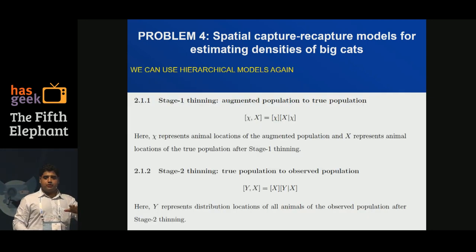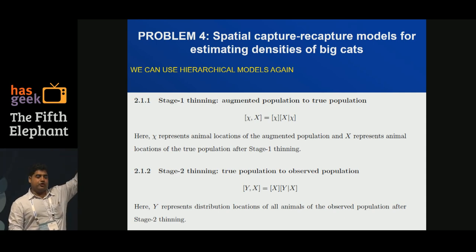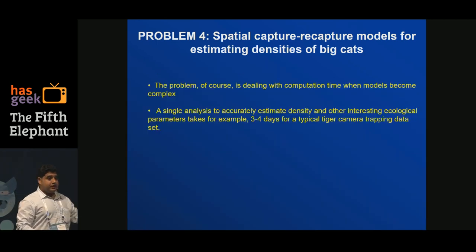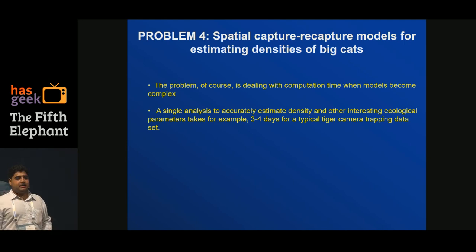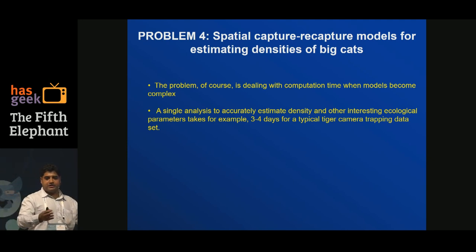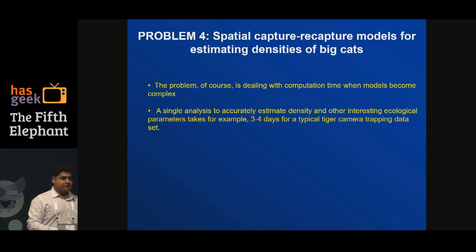We use the same approach: some reality is out there — animals have distributed themselves in space — and what we get is a thinned-down set of data. With this thinned-down set of data, we need to form conclusions of what's happening above. We can now, due to Markov chain Monte Carlo techniques — which Salman will talk about — use this very powerful tool. But it does come with some problems: we tend to build very complex models to explain the phenomena, and it takes a very long time when we use computers. Typically one analysis takes four days for a tiger data set. But we get very interesting results — we are actually able to say which parts have very high tiger densities and where we should focus our attention to try to recover tiger numbers.